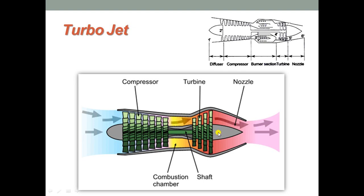The exhaust gases from the gas turbine, which are at higher pressure than the atmosphere, are expanded in a nozzle and a very high velocity jet is produced, which provides forward motion to the aircraft opposite to the jet reaction.